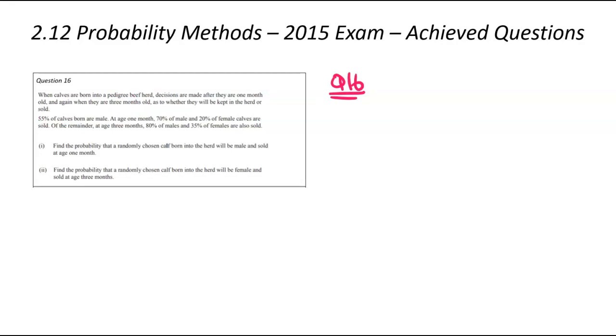One month stage, 70% of males and 20% of females are sold. At the three month stage, 80% males sold, 35% females sold. There's a couple of different ways we could have approached this question. We could have done a tree.